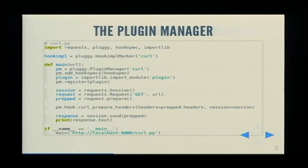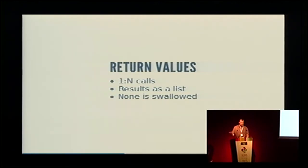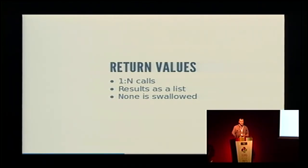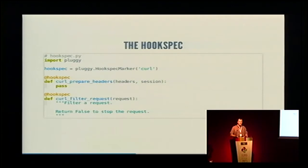That is essentially everything you need to do to create and start using plugins. Because the hook I wrote didn't actually return any value, you can have multiple plugins all implementing this hook — they would all have the same dictionary passed into them and would all be modifying it. When your hooks want to return a value, that's also possible. It returns a list of all the return values of each hook, and then your application decides what to do with them. As a quick example I'm going to add another hook specification.